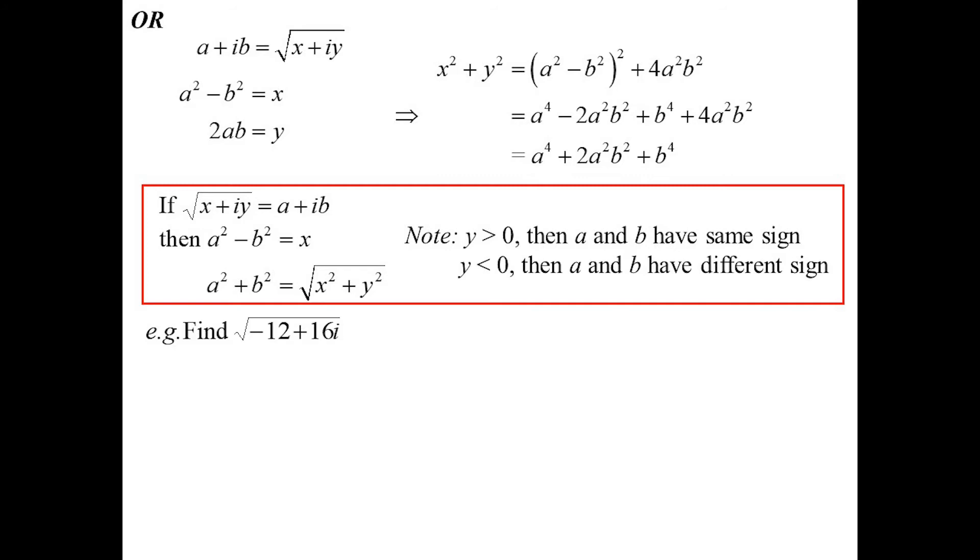So let's do the same question. Square root of minus 12 plus 16i, I could say, OK, I know a squared minus b squared must be the real part. a squared plus b squared must be the square root of the sum of two squares. 12 squared, 144. 16 squared, 256. Add them together. You get 400. And that works out nice.